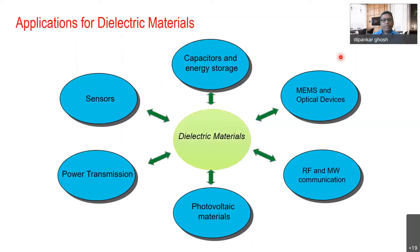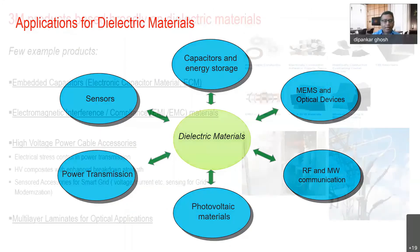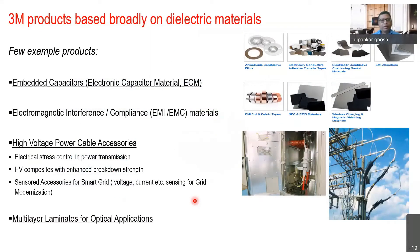In terms of applications, the biggest is capacitors and energy storage. High-speed communication is very important — we already have 5G introduced in many parts of the world and 6G is not too far away. RF and microwave communication uses a lot of dielectric materials. Power transmission and power cables also use a lot of dielectrics. There are other applications too — sensors, MEMS devices, and PV materials.